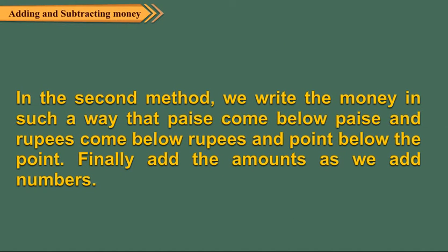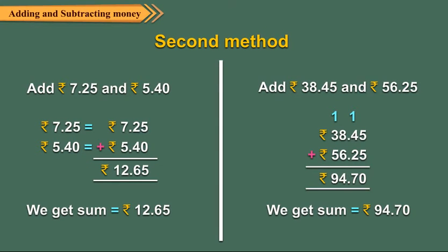In the second method, we write the money in such a way that paise comes below paise and rupees come below rupees and point below the point. Finally, we add the amounts as we add numbers. Let us take a look at the example shown.